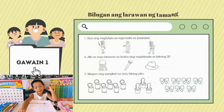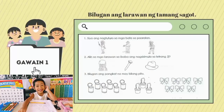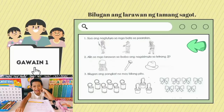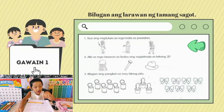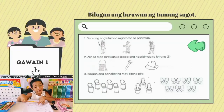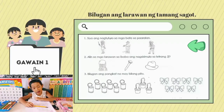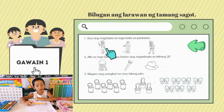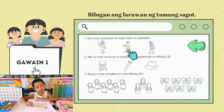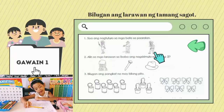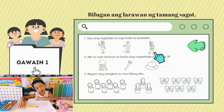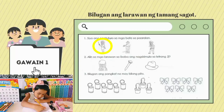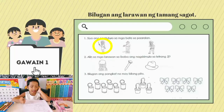Unang gawain: bilugan ang larawan ng tamang sagot. Unang bilang — siya ang nagtuturo sa mga bata sa paaralan. Meron ditong guro, bombero, at pulis. Bilugan natin ang guro.